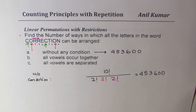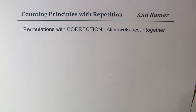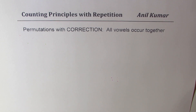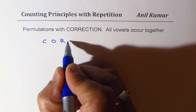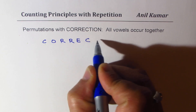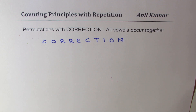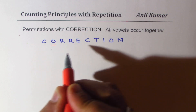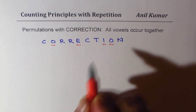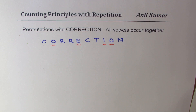Now let's see when we have the condition that all vowels occur together. The word is CORRECTION: C-O-R-R-E-C-T-I-O-N. What are the vowels? A-E-I-O-U — so we have O, E, I, O. These are four vowels: O, O, E, I. And consonants are the remaining 10 minus 4, which gives us 6 consonants.